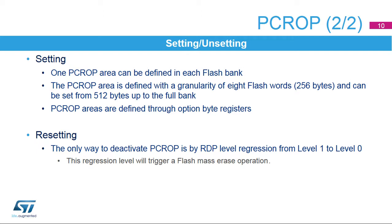The proprietary code readout protected areas in flash memory are defined through the option bytes. One PCROP area per bank can be defined. Each area is configured with a granularity of 256 bytes and can be set from 512 bytes up to the full bank. The areas are protected against access through the data bus. Only the instruction bus of the Cortex-M7 core can access the protected sector for code execution. Note that sectors protected with the PCROP feature are also protected against write access, offering protection against unwanted sector write or erase operations.